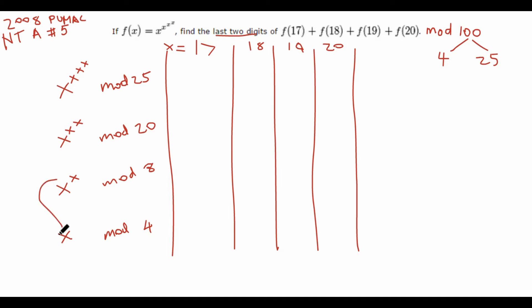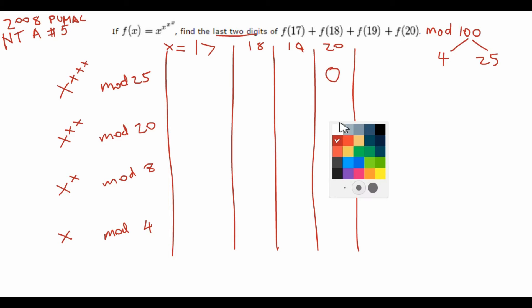And if you want, you can take it a step further to get x mod 4. First, let's calculate f(20) mod 25. Notice that 20 and 25 are not relatively prime, so we can't directly use Euler's theorem. But notice that 20 squared is 400, which is 0 mod 25. So 20 to the 20 to the 20 is also 0 mod 25, and we can cancel out those remaining boxes.